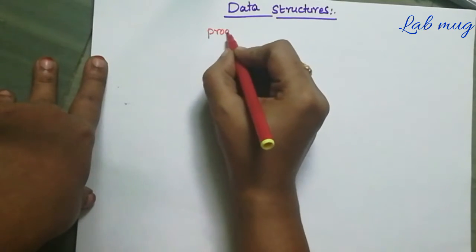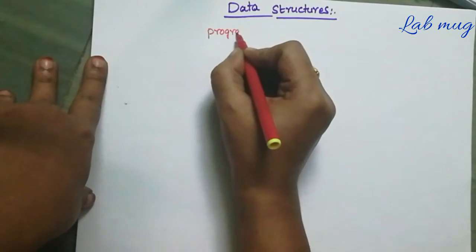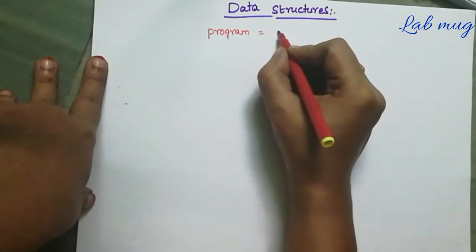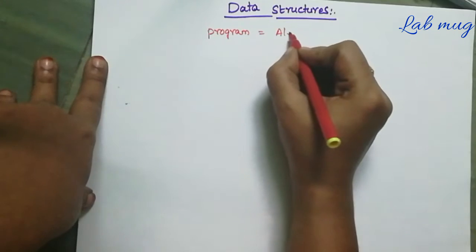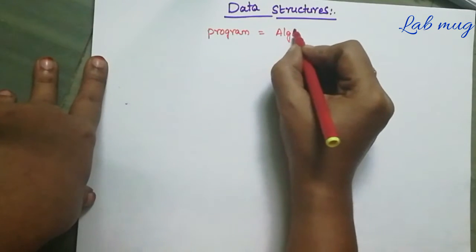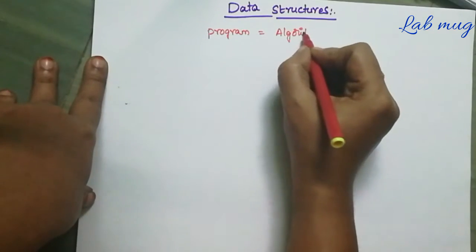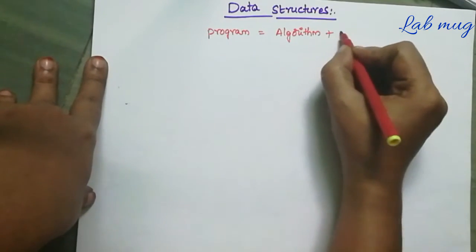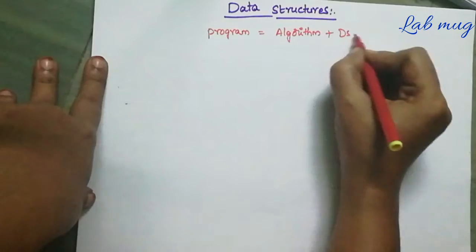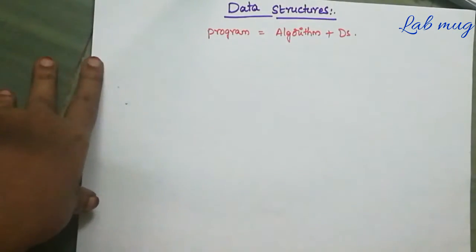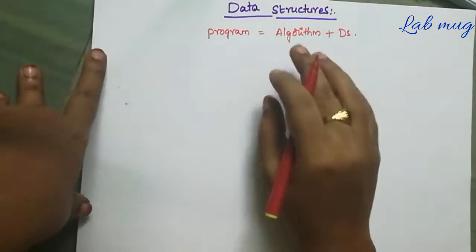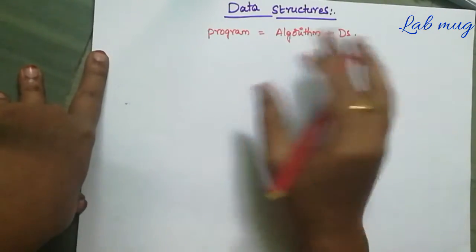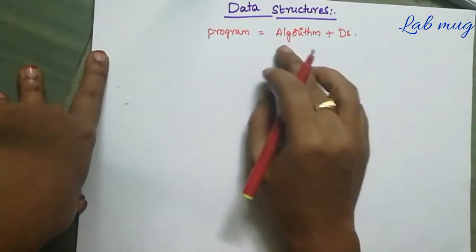So first of all, program ni manam ella cheppa choe hoan teh - it is equal to Algorithm plus Data Structures. So what is a Program? It is nothing but a collection of Algorithm plus Data Structures.